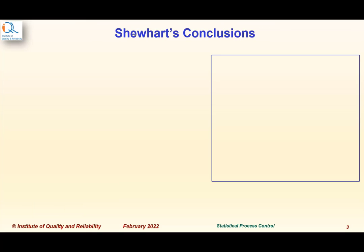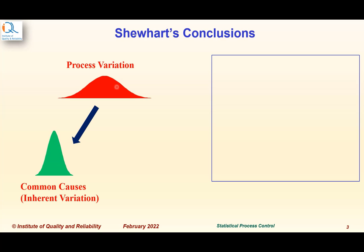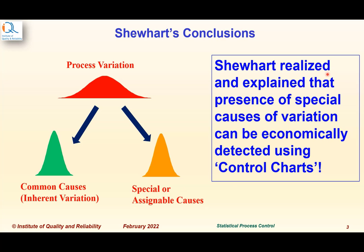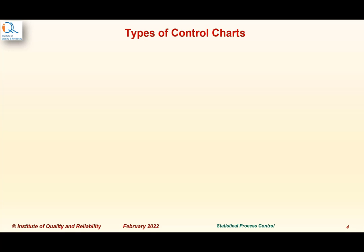So what were Shewhart's conclusions? Shewhart concluded that process variation can be subdivided into two components: variation due to common causes or inherent variation, and variation due to special or assignable causes. Shewhart realized that the presence of special causes of variation can be economically detected using control charts.